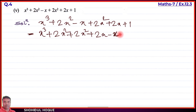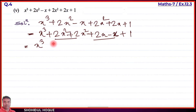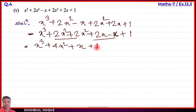The constant is 1, kept as it is. x cube has no like term, as it is. Combining: 2x square plus 2x square equals 4x square. Minus x plus 2x equals plus 1x. So simplified expression is x cube plus 4x square plus x plus 1.